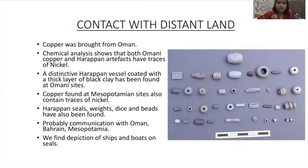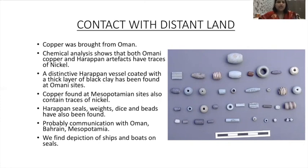Copper was also brought from Oman. Chemical analysis shows that both Omani copper and Harappan artifacts have traces of nickel. A distinctive Harappan vessel coated with a thick layer of black clay has been found at Omani sites; historians believe it was used to carry liquids as the black clay stopped percolation. Copper found at Mesopotamian sites also contained traces of nickel. Harappan seals, weights, dyes and beads have also been found there, suggesting communication with Oman, Bahrain and Mesopotamia. Depictions of ships and boats on seals show that these were probably used to transport materials. In Mesopotamian texts, the word 'Meluha' has been largely identified with Harappa, and the 'haja bird' has been identified as the peacock.